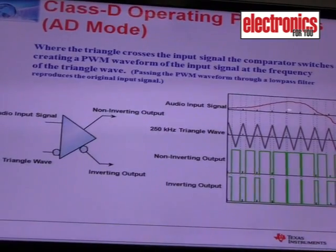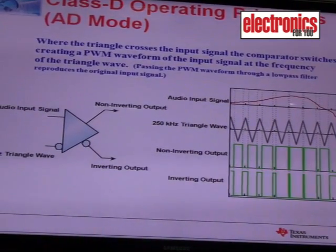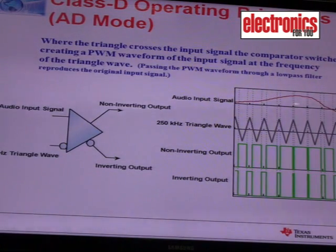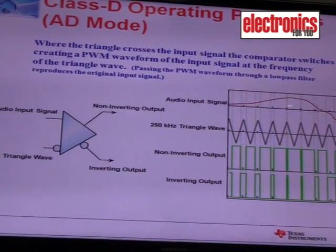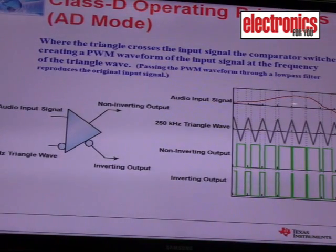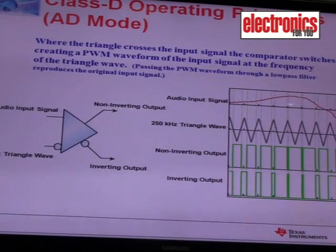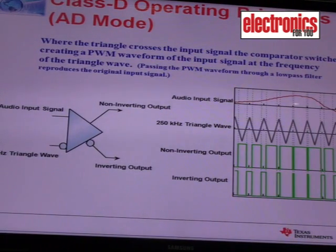The Class D amplifier is quite easy to understand. What we do is modulate the audio signal with a high frequency oscillation — basically a triangular wave. We take an analog input and compare it with a triangular wave of around 250 kilohertz frequency. But the question is: why 250 kilohertz? It can be 10 kilohertz or 1 megahertz — why something like 250 or 300 kilohertz?